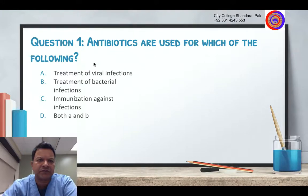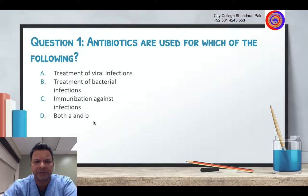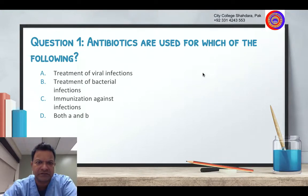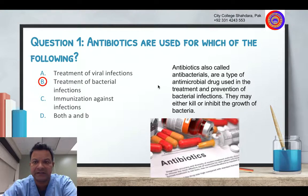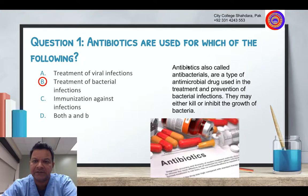Antibiotics are used for which of the following? The treatment of viral infections, treatment of bacterial infections, immunization against infections, or both A and B. That's right — this is only for bacterial infection. Be careful. Antibiotics should only be given when someone has a bacterial infection. Antibiotics are also called antibacterials. They are a type of antimicrobial drug used in the treatment and prevention of bacterial infections.